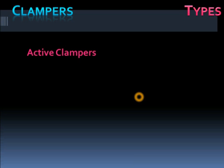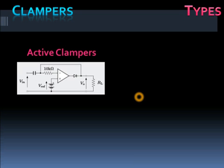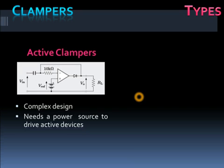In active clampers we use active devices such as transistors and op-amps. They can clamp a signal precisely at a given reference level. In this case we have more control over the input and output impedances of the circuit.